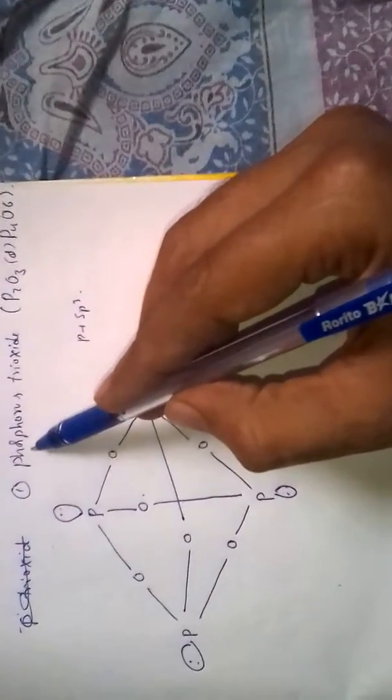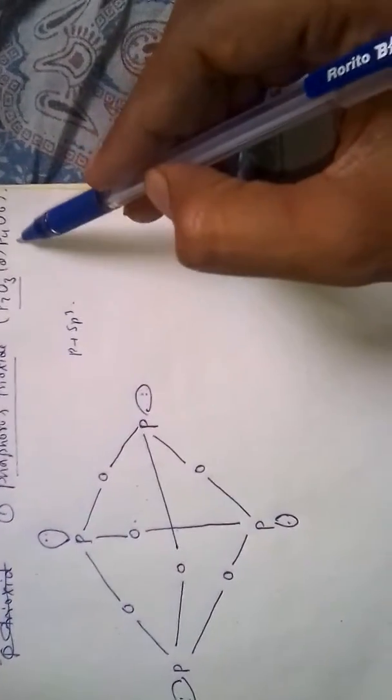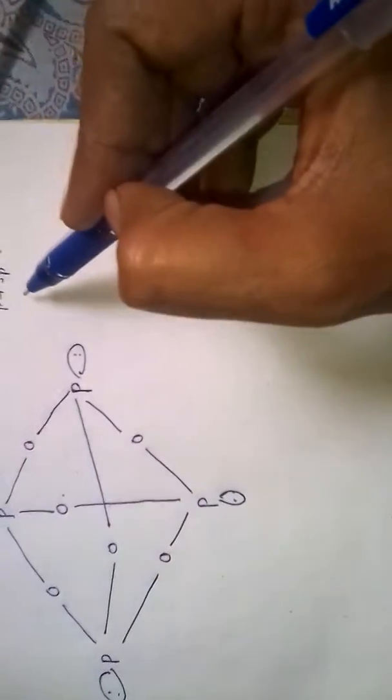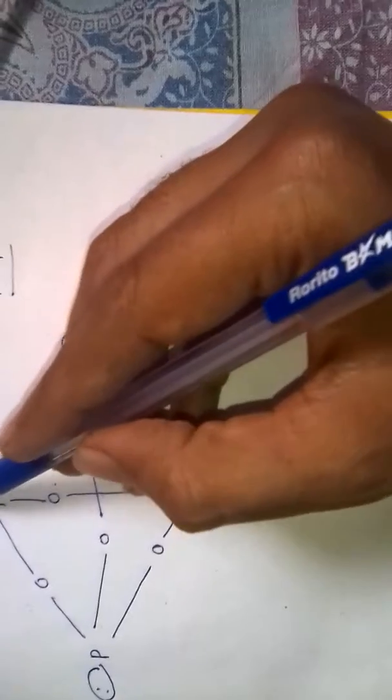Phosphorus has two important oxides. Phosphorus trioxide has the formula P2O3 and exists as a dimer. Phosphorus undergoes sp3 hybridization, linked with 3 oxygens, with the 4th position occupied by a lone pair.